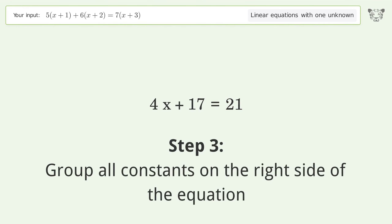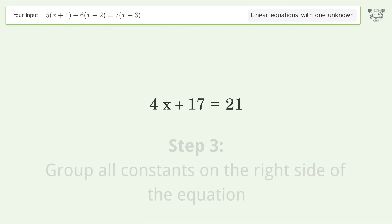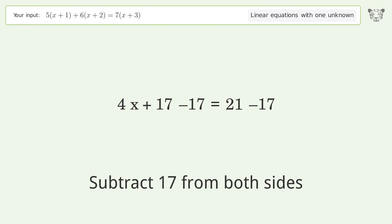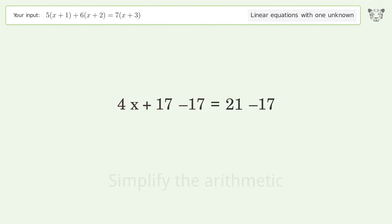Group all constants on the right side of the equation. Subtract 17 from both sides. Simplify the arithmetic on the right side of the equation.